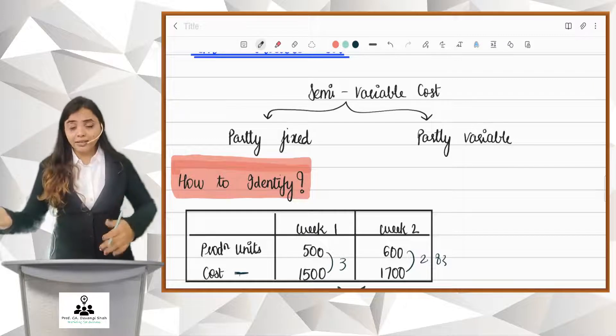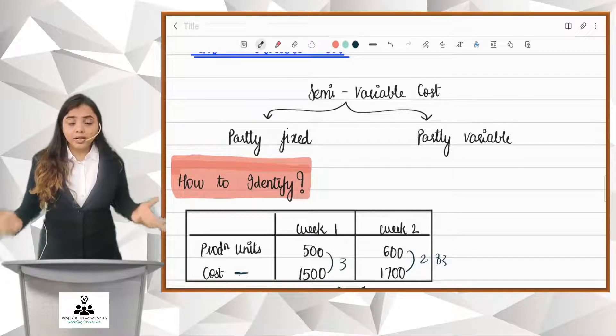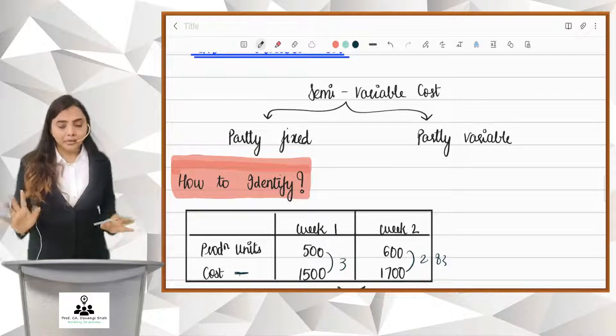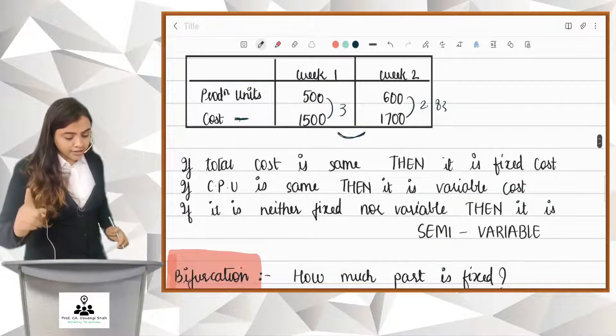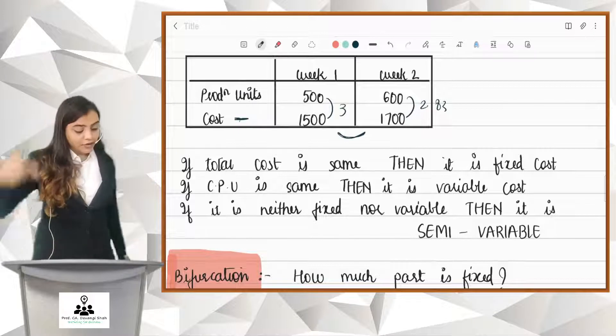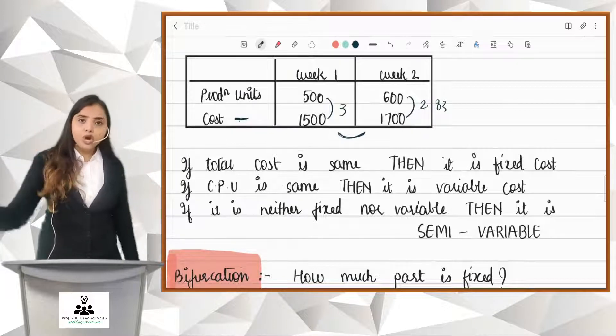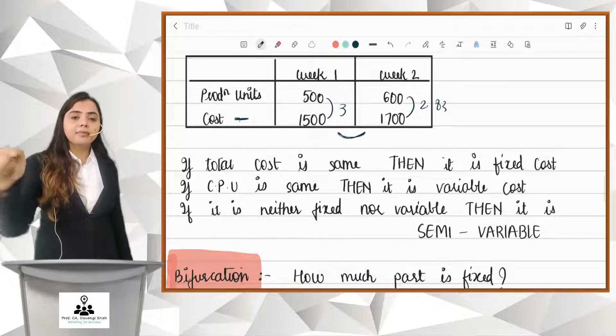Now, if it is not fixed, it is not variable, then what it is? Friends, if it is neither fixed nor variable, then it is semi-variable. So, have a look at this. If the total cost is same, then it is fixed. If cost per unit is same, then it is variable. And if it is neither fixed nor variable, then it is semi-variable.